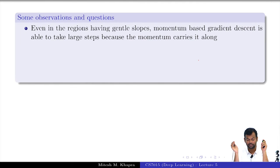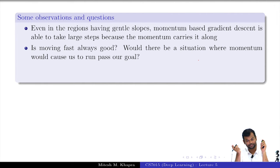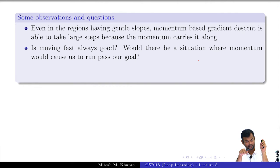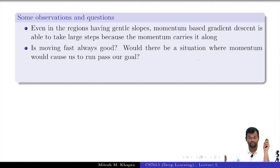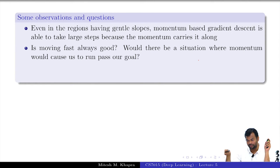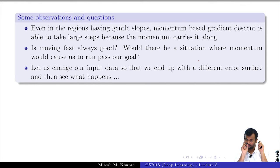Even in regions where the slope was gentle I was able to move fast. But is moving fast always good? Would there be a situation where momentum would cause us to run past the goal? Same analogy: now instead of walking you are in a car, you keep accelerating, and eventually you go past Phoenix Market City. Then you take a U-turn, come back, overshoot again, and keep taking these U-turns. Let's change the input data and see what happens to momentum-based gradient descent.